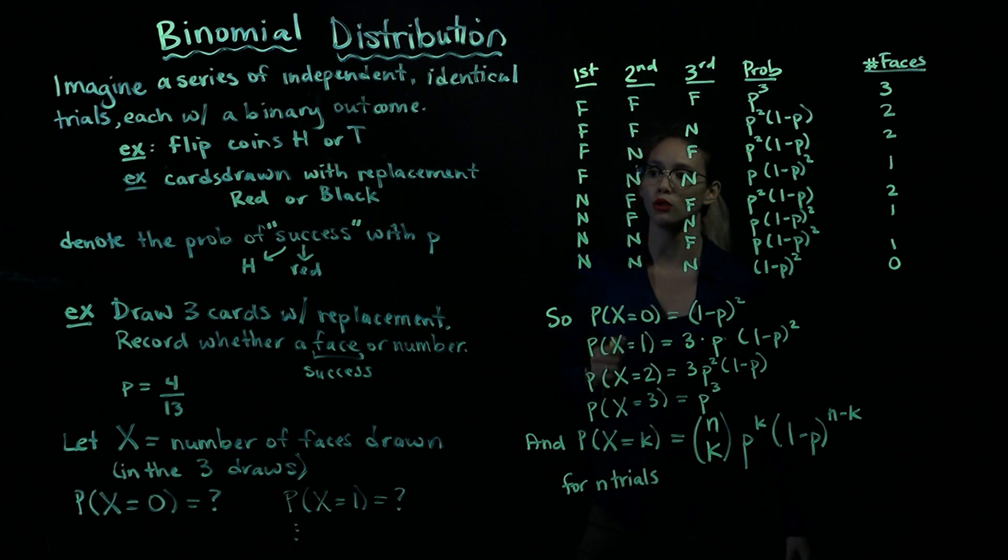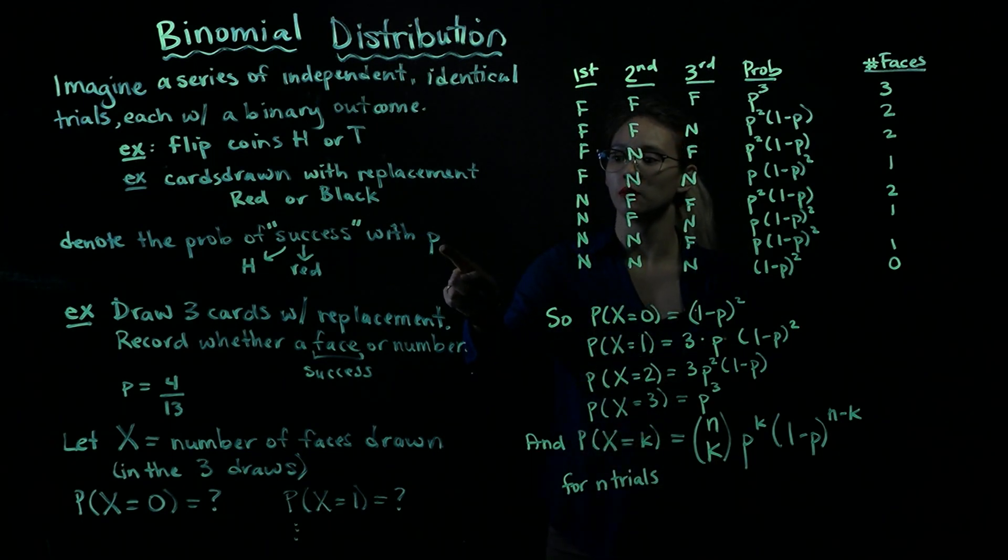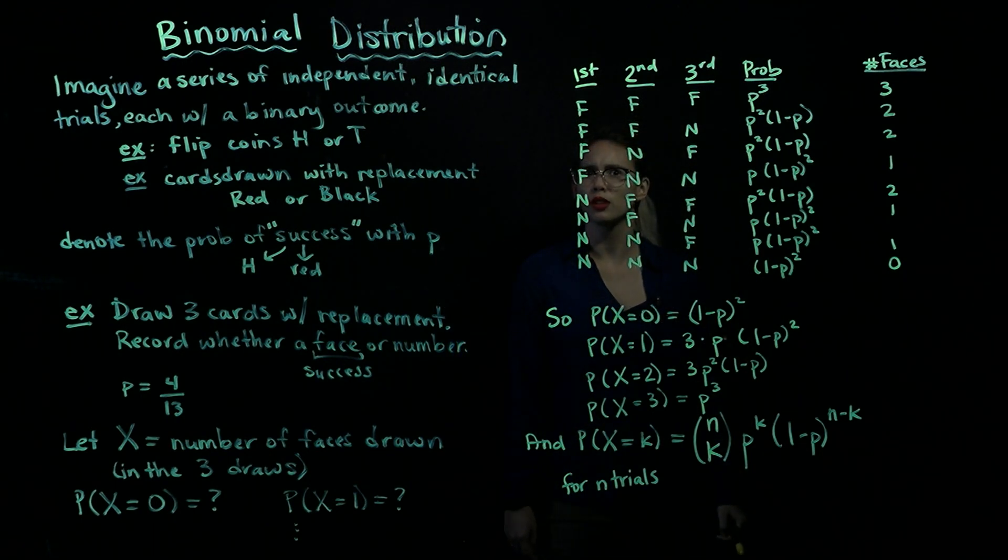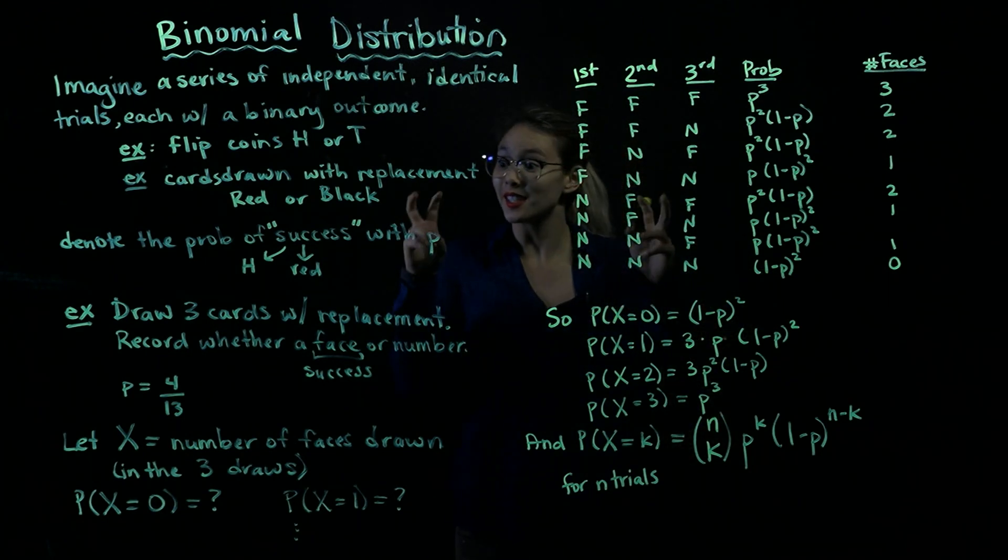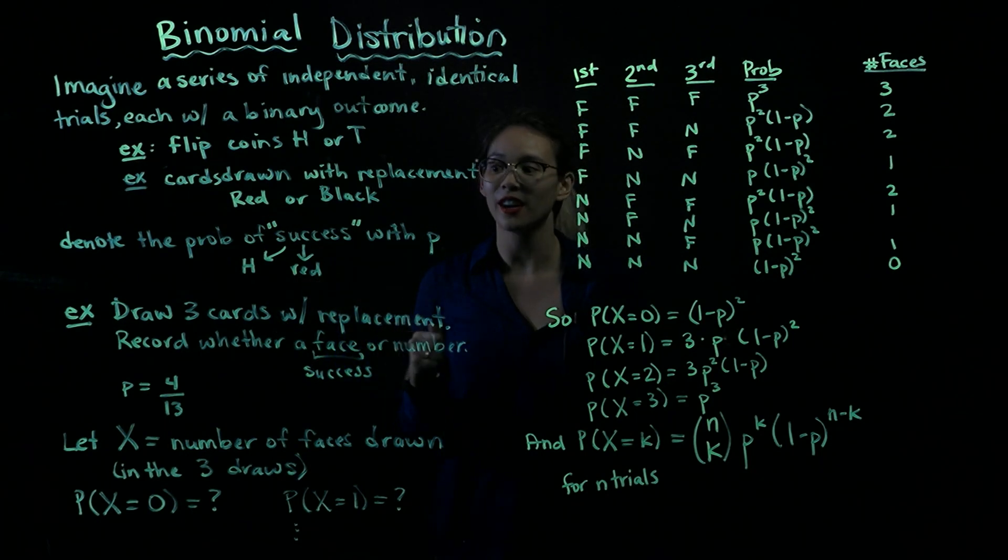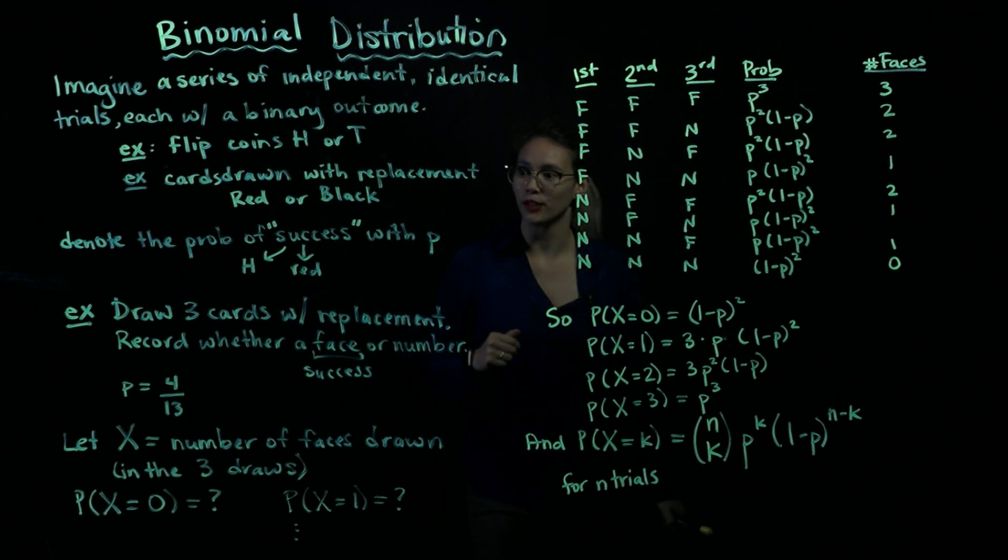So usually we'll use p, a small p, to denote the probability of success. You can define success in a lot of different ways, just like in life. So success could be getting a heads, it could be getting a red card, you can define it however you like.